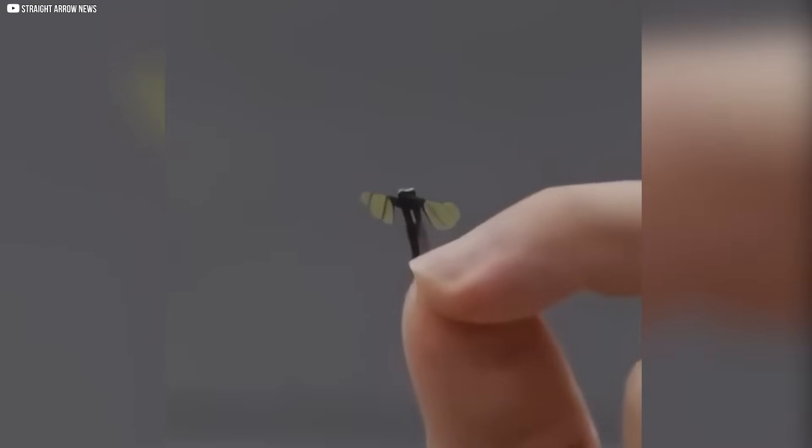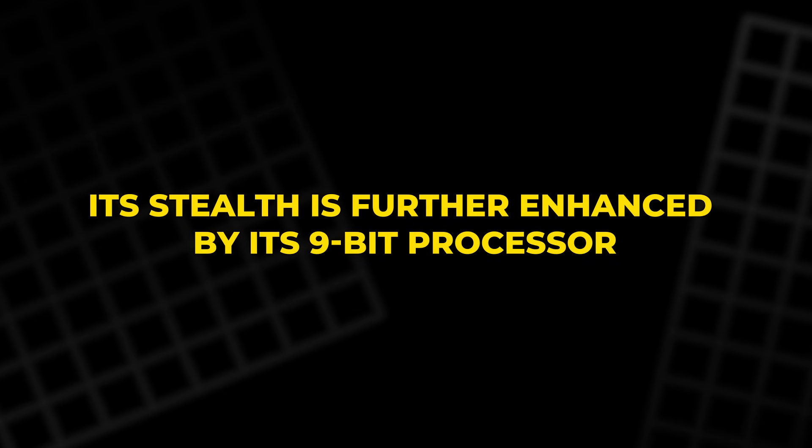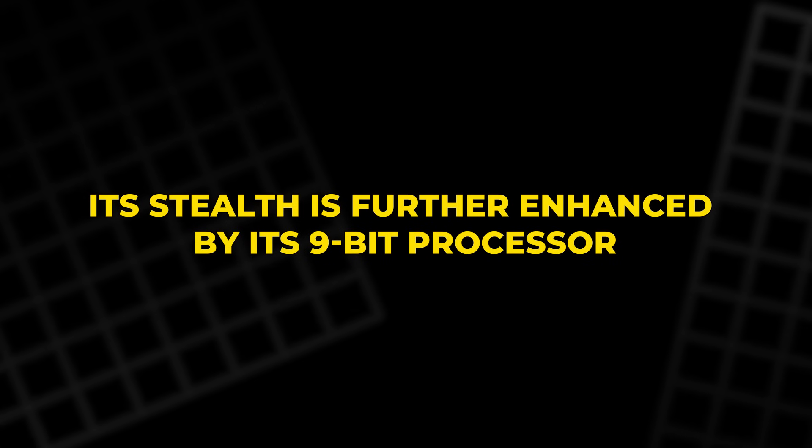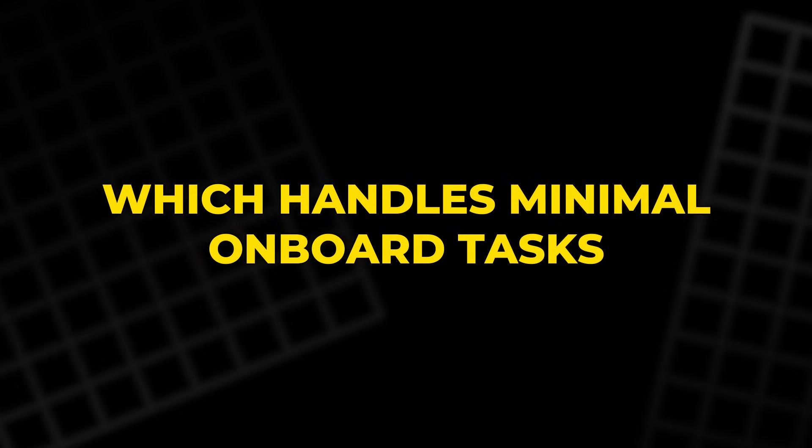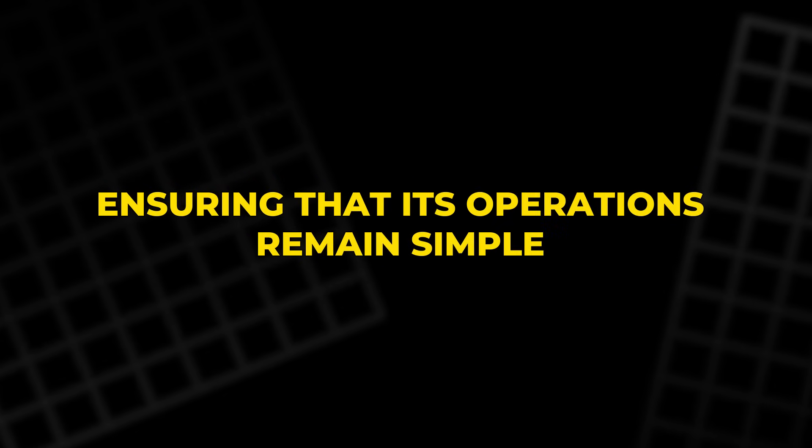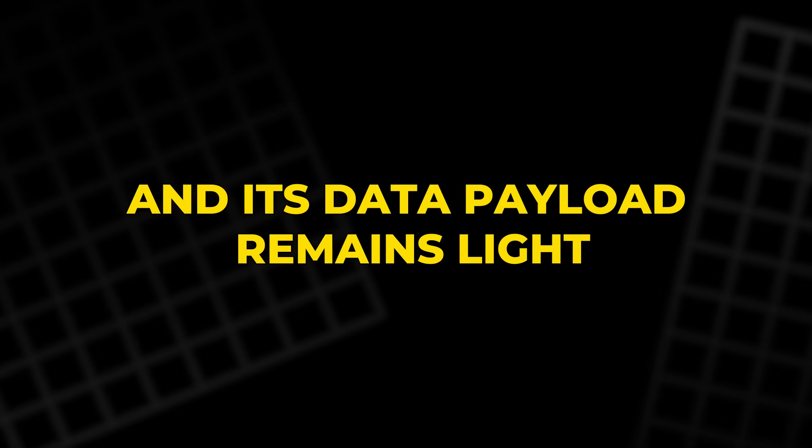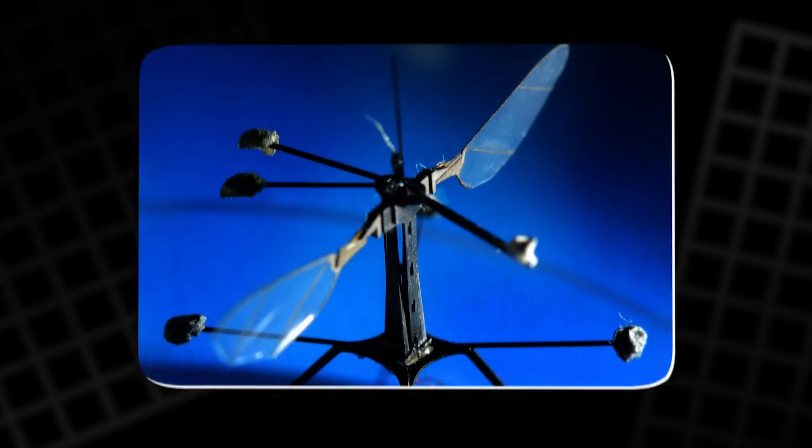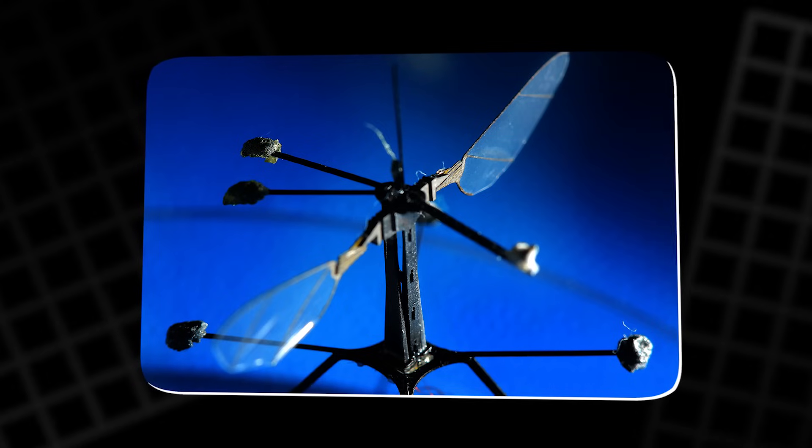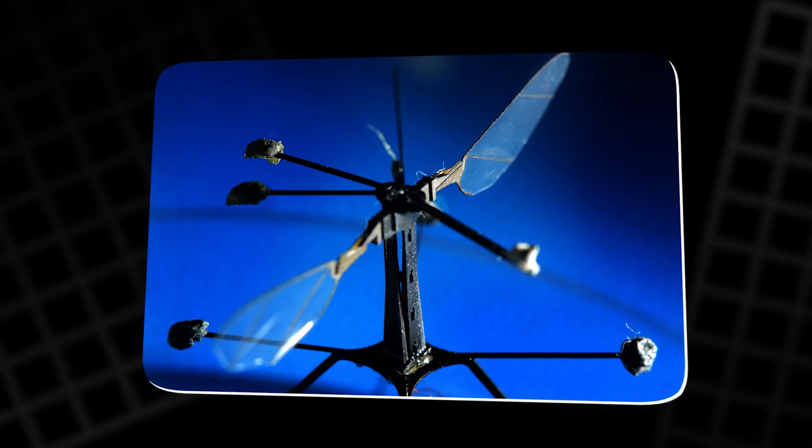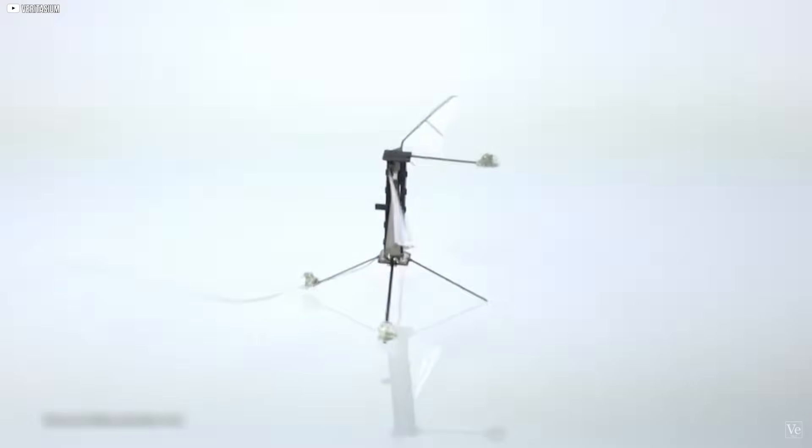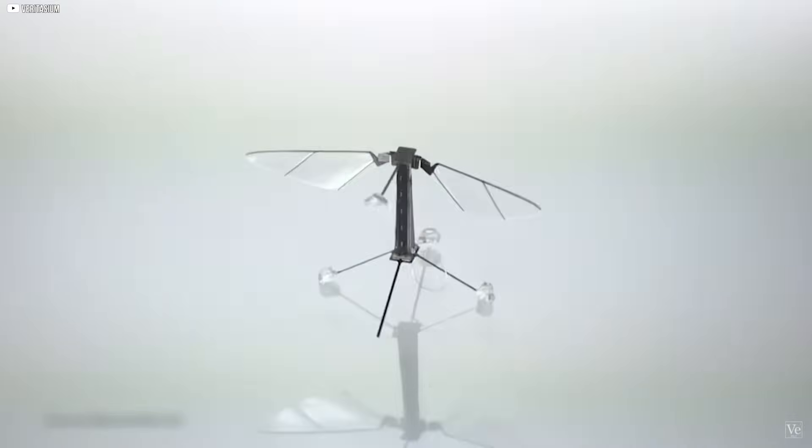The microphone filters out the drone's own wing vibrations, ensuring clean, accurate audio. Its stealth is further enhanced by its 9-bit processor, which handles minimal onboard tasks, ensuring that its operations remain simple and its data payload remains light. The drone's encrypted communication and its ability to perch motionless for hours make it the perfect tool for covert surveillance in hostile environments.